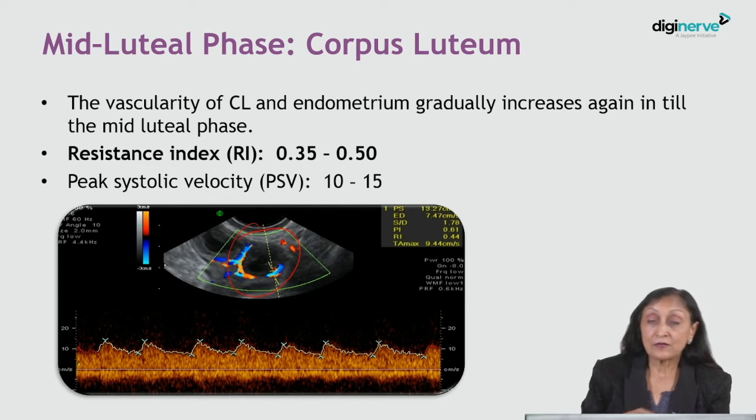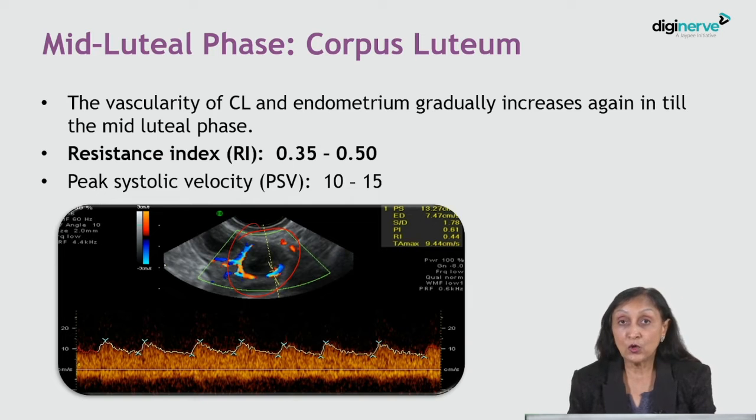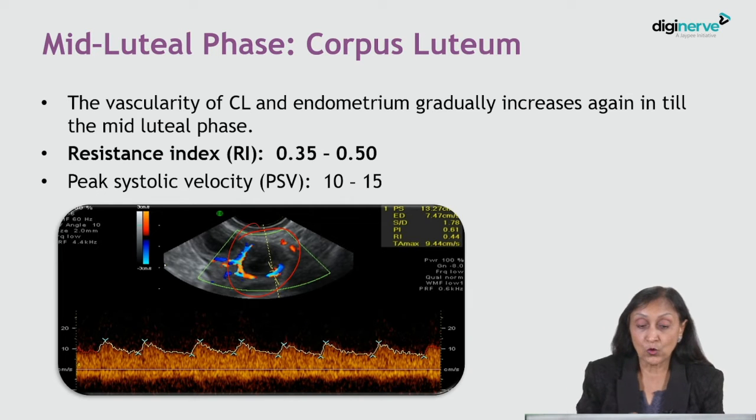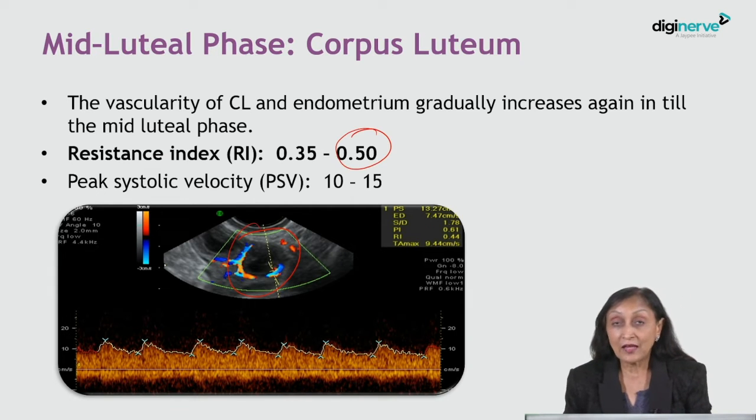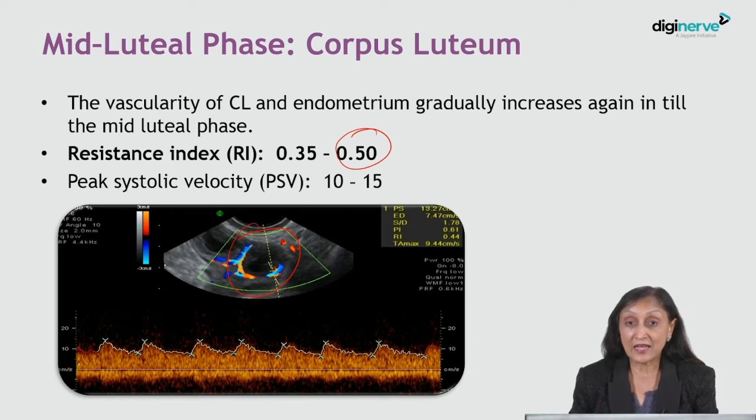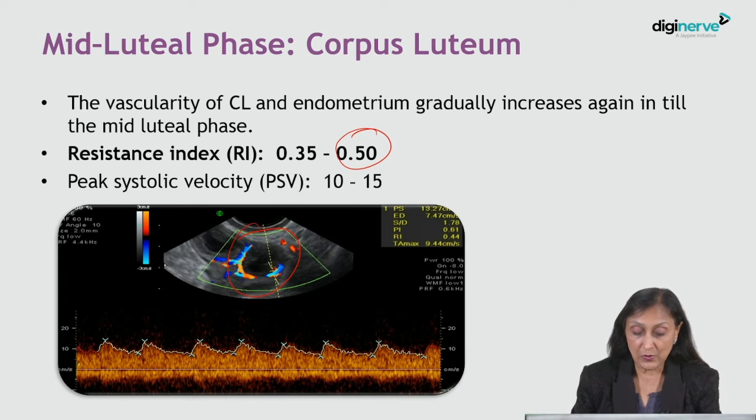In the midluteal phase, the corpus luteum shows a nice ring of color, and this flow is a low resistance flow with an RI of less than 0.5 and a PSV of between 10 and 15 centimeters per second. This indicates that progesterone production from the corpus luteum is sufficient to support the pregnancy.